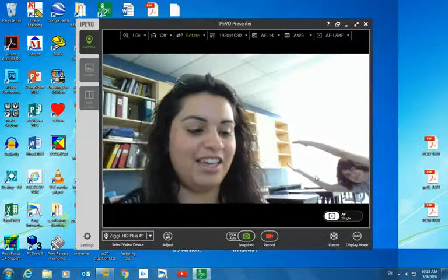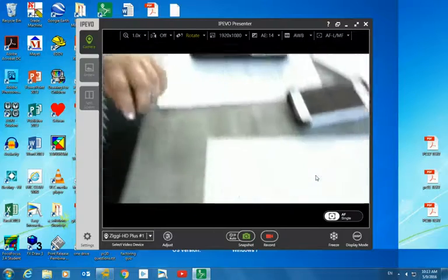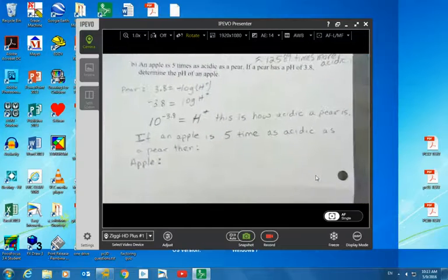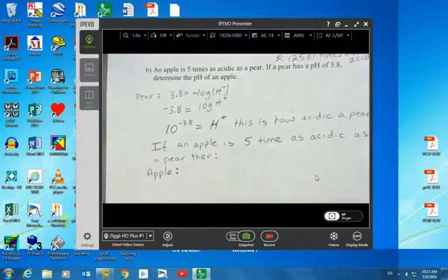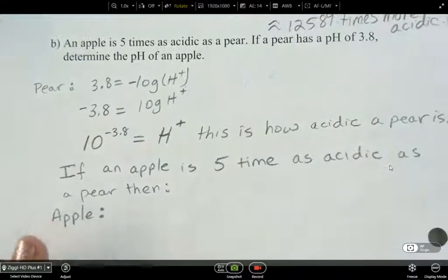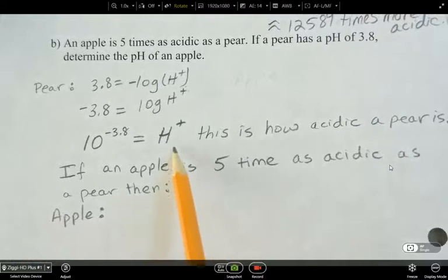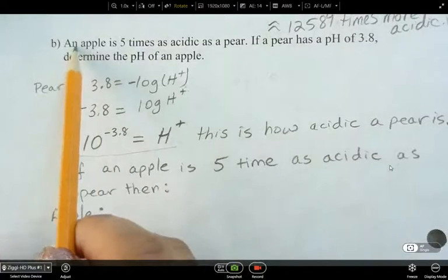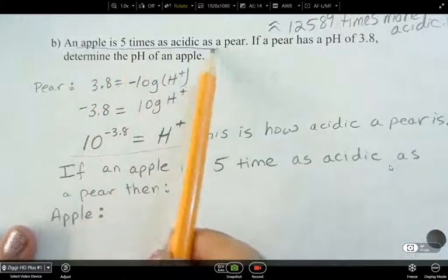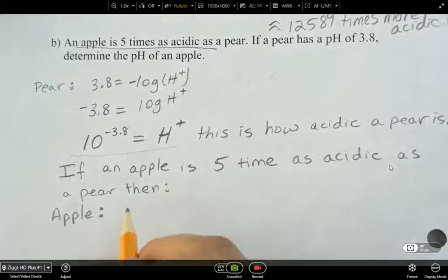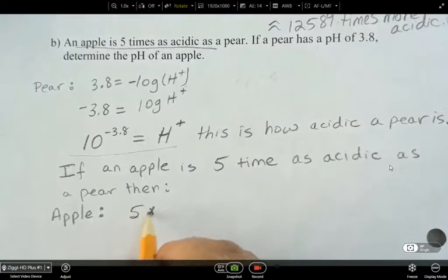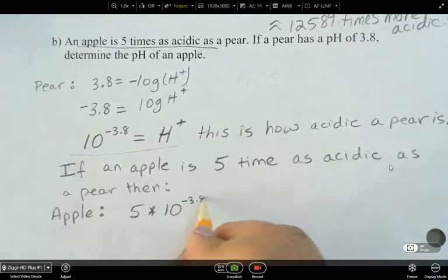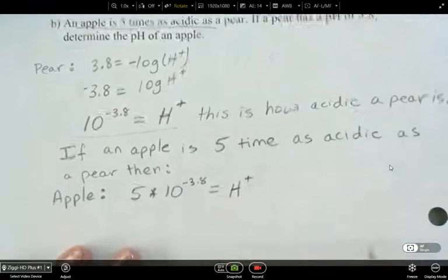So we're back, and we're going to finish off the apple and pear question. What we've done is we've looked at how acidic a pear is. Set it up in our equation, and we've figured out how acidic a pear is. This is how acidic the pear is. Now, it says here an apple is five times as acidic. So that means an apple is going to be five times your 10 to the power of negative 3.8. That's how acidic a pear is.